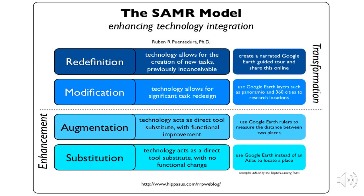In the SAMR model, we see stages of technology integration. The acronym represents four levels: S is for substitution, A is for augmentation, M is for modification, and R is for redefinition. This model sets up a hierarchy beginning with substitution, which is basically substituting a tech device for a more traditional tool to complete the same task. For example, moving from note-taking with paper and pencil to a note-taking application on your computer, or as the example on this slide shows, using Google Earth instead of an atlas to locate a place. This is early integration.